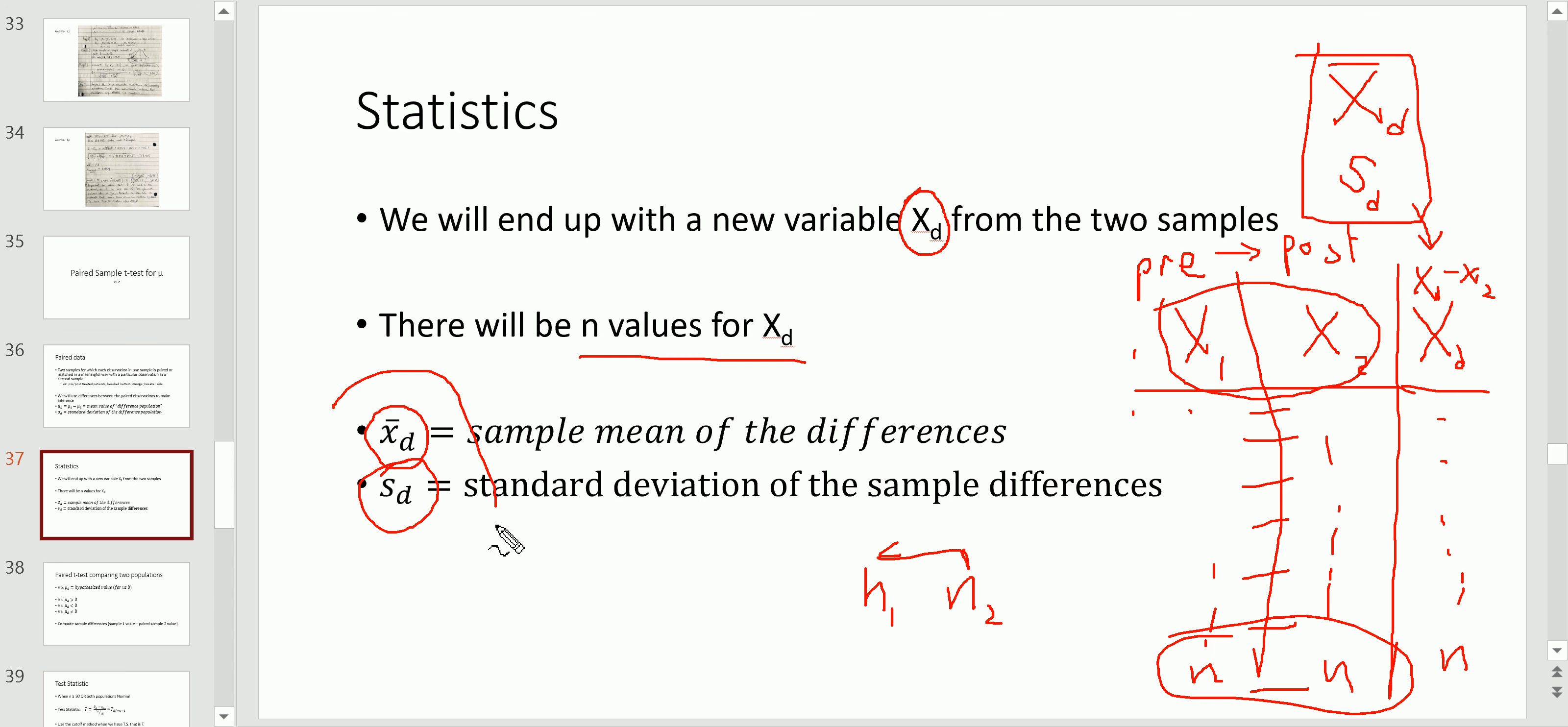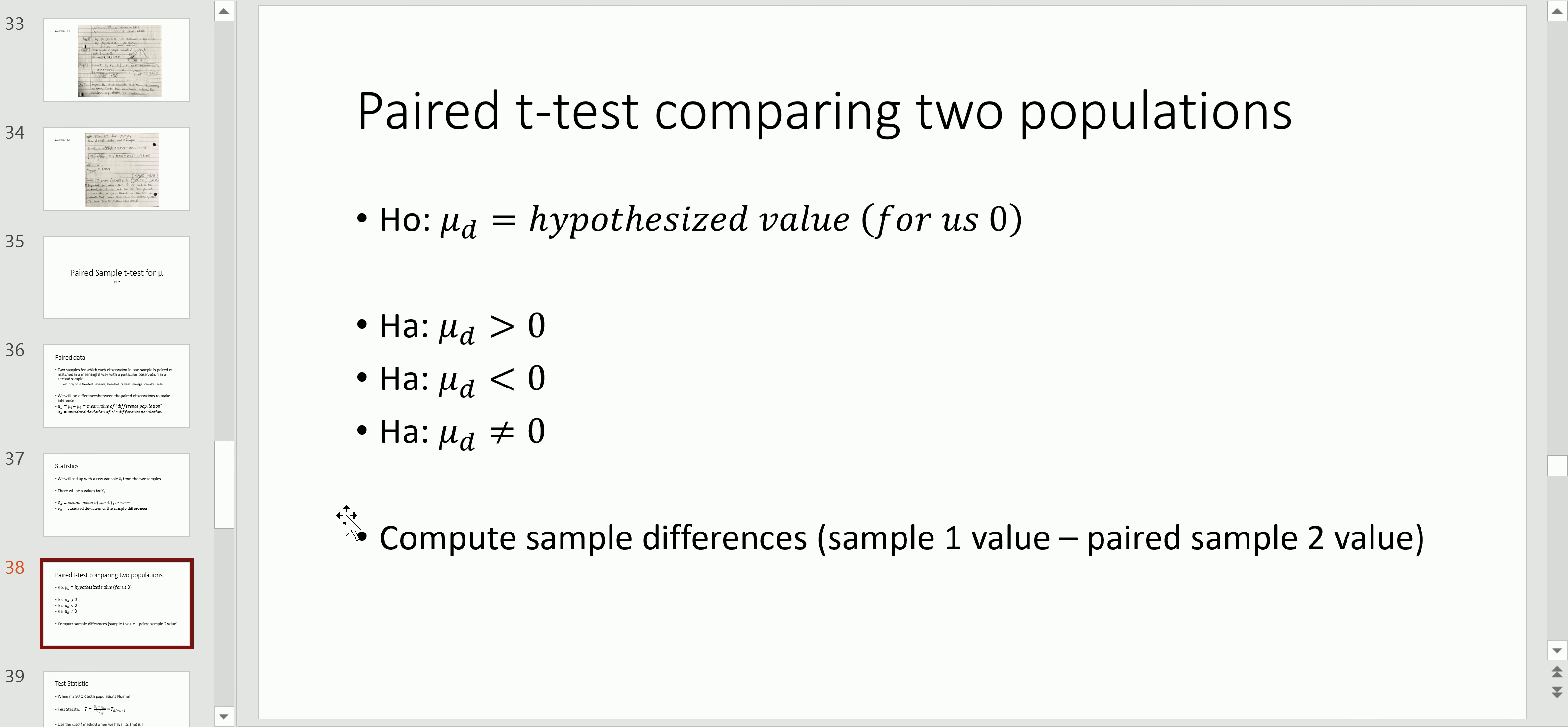Now with these two, we're going to compute our test statistic next. But before we do that, let's just take a look at the form of the hypothesis tests in this type of hypothesis. We're going to have the null hypothesis, which is what we initially assumed to be true, saying that the difference is equal to some hypothesized value.